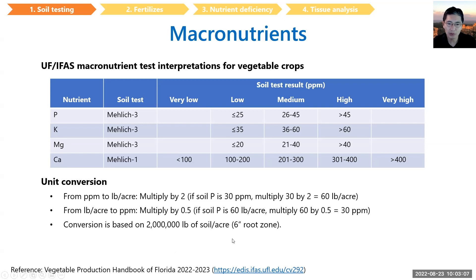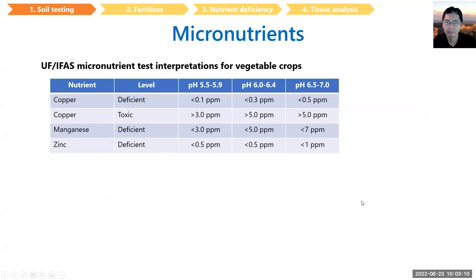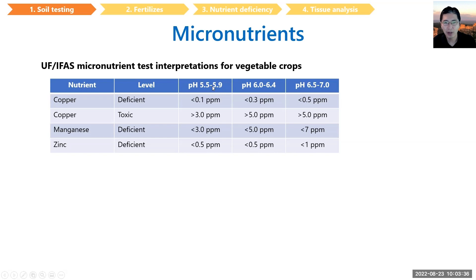All this information can be found at the link provided. For micronutrients, the interpretation depends on soil pH. This table lists micronutrients and whether levels are deficient or toxic at different pH ranges. For example, in the case of copper, when soil pH is between 5.5 and 5.9, if the soil test shows below 0.1 ppm, that's considered deficient and additional copper application is needed.